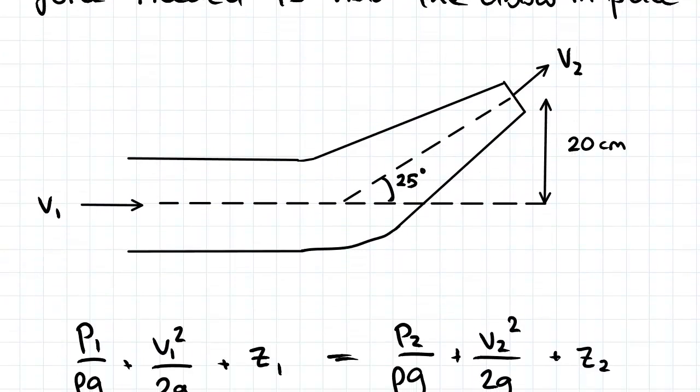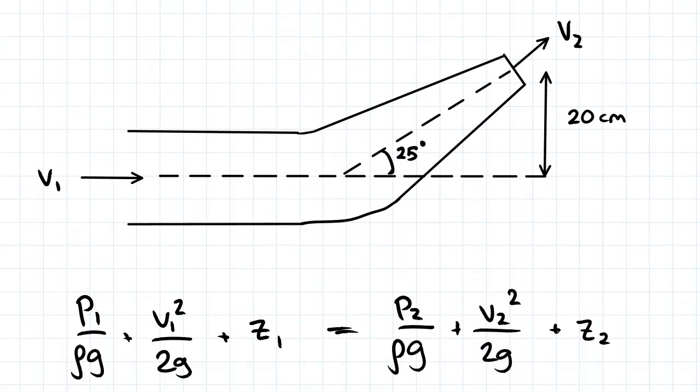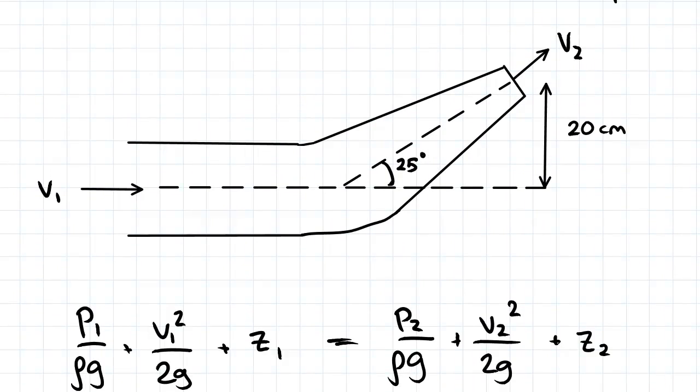So let's carry out the Bernoulli equation. Let's establish our streamline and datum. My two points are going to be at the inlet here and at the outlet. And for my datum I'm going to define it here at the center line. So my Bernoulli equation is applied along streamline 1 to 2.